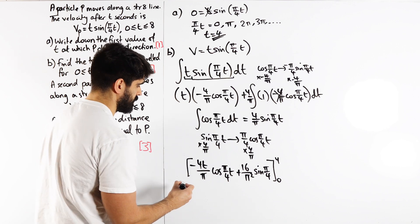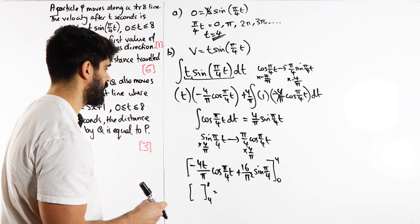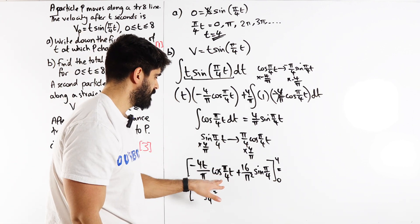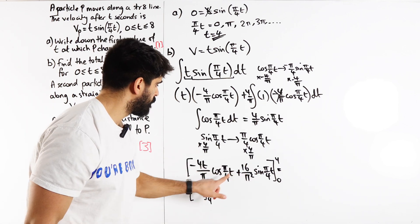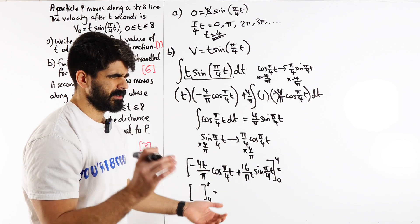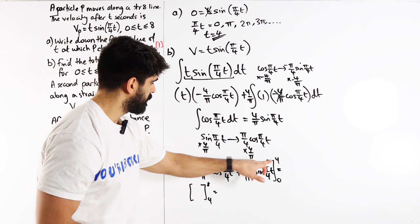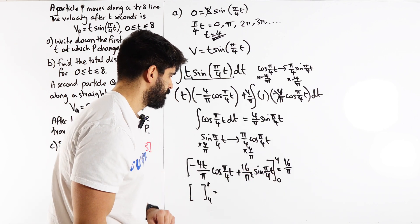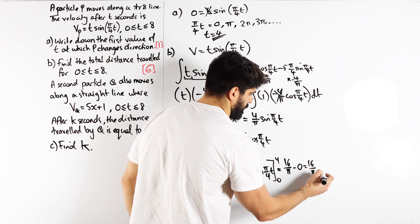When you sub in 4, cos of π is minus 1. Minus 1 times that becomes plus 4t/π, so it's positive 4t/π. With 4 we get 16/π. Luckily when I sub in 4, I get sin of π which is just zero. Then when I sub in zero, that's going to be zero, and subbing in zero here we just get zero. So we just get 16/π. Sweet as a nut.